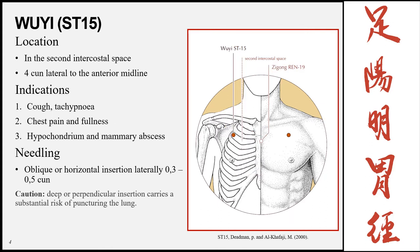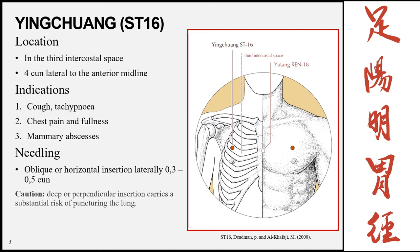The next point is Wuyi, Stomach 15, in the second intercostal space on the 4 cun lateral line. Indications are similar to the previous point: cough, tachypnea, chest pain and fullness, and it can also be used for hypochondrium or mammary abscesses. Insertion is oblique or horizontal laterally, 0.3 to 0.5 cun, with the same caution against deep or perpendicular insertions.